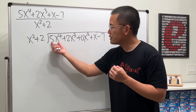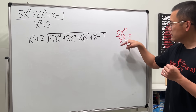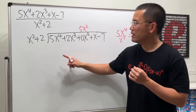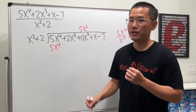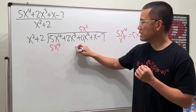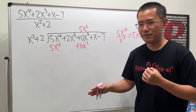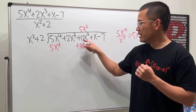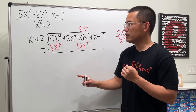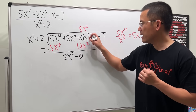Compare the first terms: 5x⁴ divided by x² is 5x². So line up 5x² in the quotient. 5x² times x² is 5x⁴, and 5x² times 2 is 10x². Subtract with parentheses: 5x⁴ cancels, and the 2x³ term carries down. For the x² column: 0 minus 10 gives negative 10x².